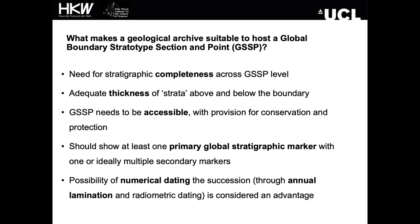A suitable GSSP requires the following parameters: stratigraphic completeness across the GSSP level; adequate thickness or time above and below the boundary; accessibility with provision for conservation and protection; at least one primary global stratigraphic marker with ideally multiple secondary markers; and the possibility of numerical dating for succession, which is certainly considered an advantage.